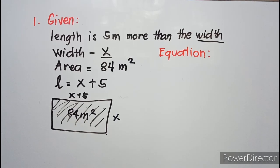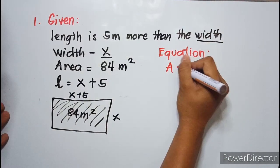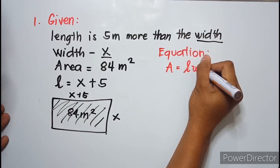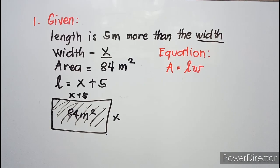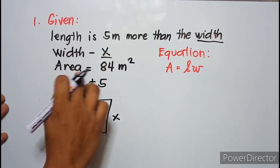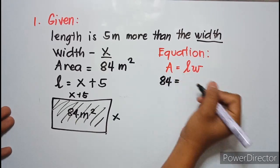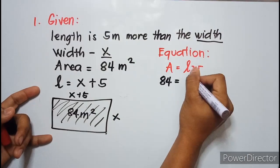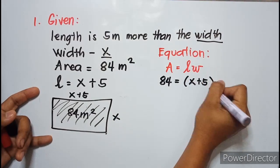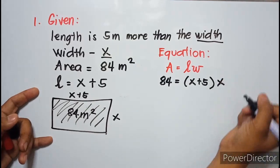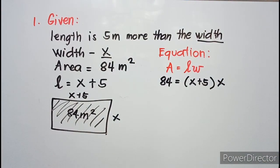We are trying to find the value of our length and width. For our equation, we are going to use: Area = Length × Width. Substituting our variables: 84 = (x + 5)(x). So this is our equation: 84 = (x + 5) times x.